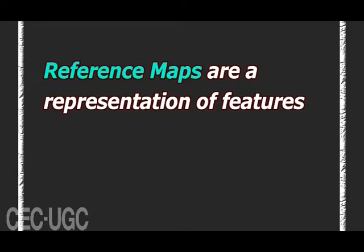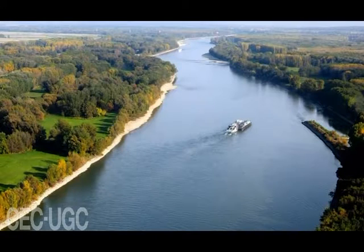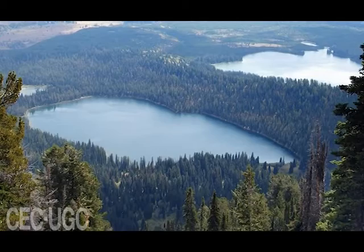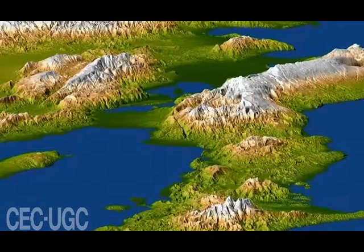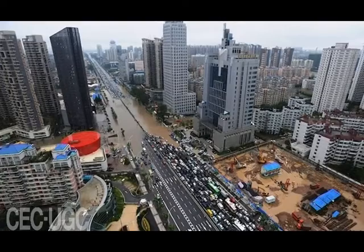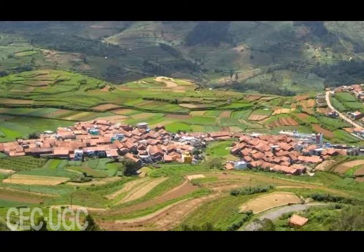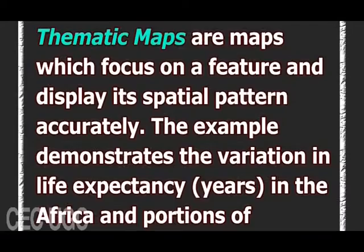Reference maps are a representation of features such as rivers, lakes, roads, topography, cities, villages, etc. Thematic maps are maps which focus on specific features and display their spatial pattern accurately.